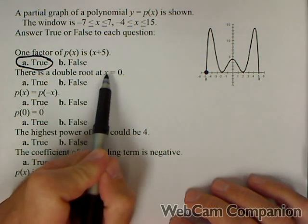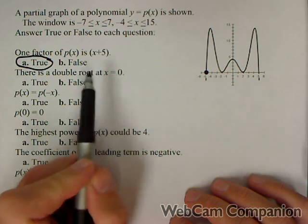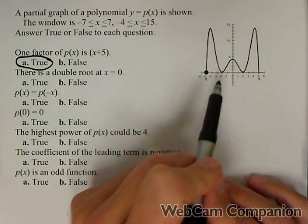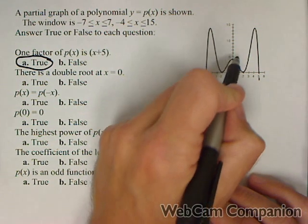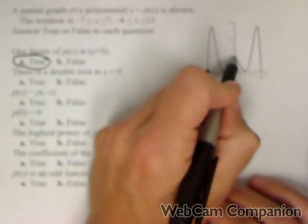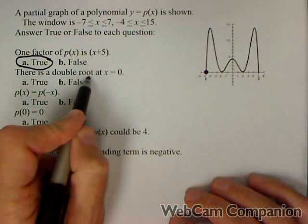There's a double root at x equals zero. Now a double root means, or repeated an even number of times, means it hits the x-axis and bounces off. Now at zero, it does not hit the x-axis. So this has to be false.